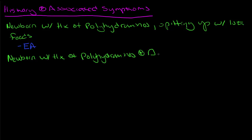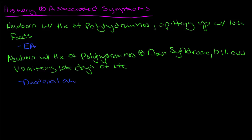So now we have a newborn also with a history of polyhydramnios, but then we get Down syndrome with it. And one of the classic congenital defects that goes with that is going to be duodenal atresia, which is failed canalization of the duodenum.